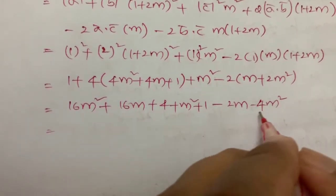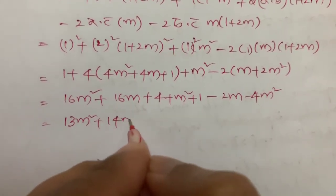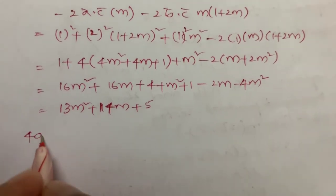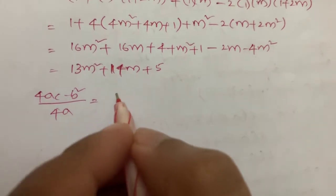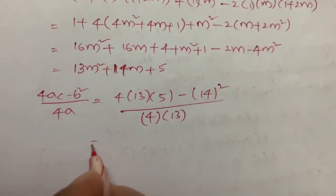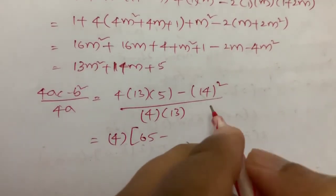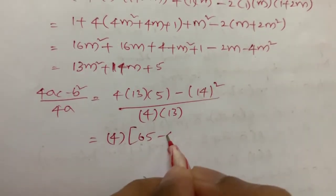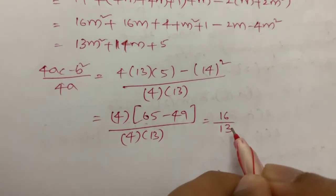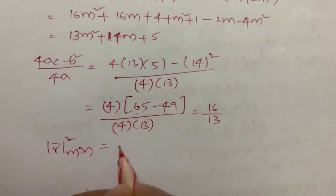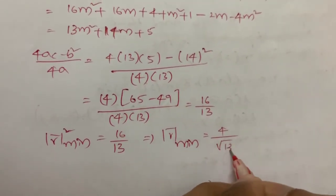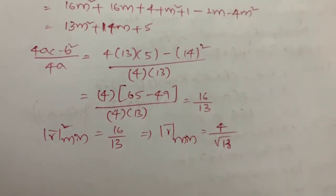This simplifies to 13m² + 14m + 5. So this is a quadratic expression in m. The minimum value of this quadratic expression is (4AC − B²) / 4A. Here A = 13, B = 14, C = 5. So: (4·13·5 − 14²) / (4·13) = (260 − 196) / 52 = 64/52 = 16/13. So the minimum of r² is 16/13, and therefore the minimum value of magnitude of r bar is 4 / √13.